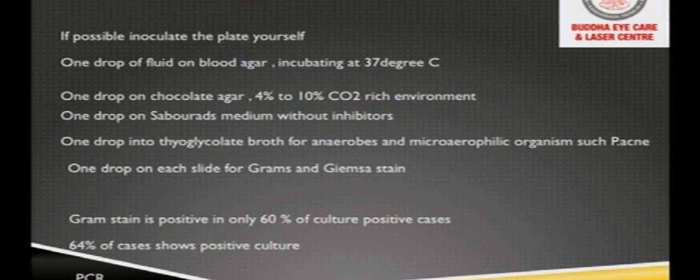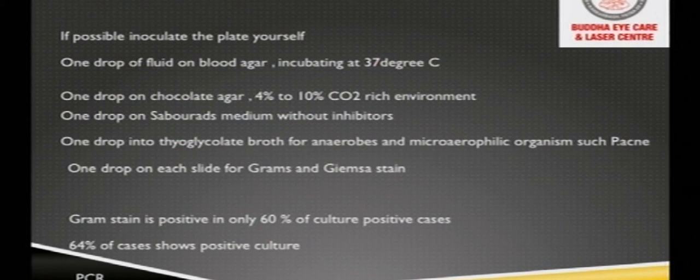If possible, plate the sample yourself in the OT: one drop of fluid on blood agar, one drop on chocolate agar, one drop on Sabouraud medium without inhibitors, one drop in thioglycolate broth for anaerobes and microaerophilic organisms such as P. acnes, and one drop on each slide for Gram and Giemsa stain. If Gram stain is negative, it doesn't mean there is no infective organism — it is only positive in 60% of culture-positive cases, and 64% of cases show positive cultures. In case of non-yielding cultures, go for PCR.